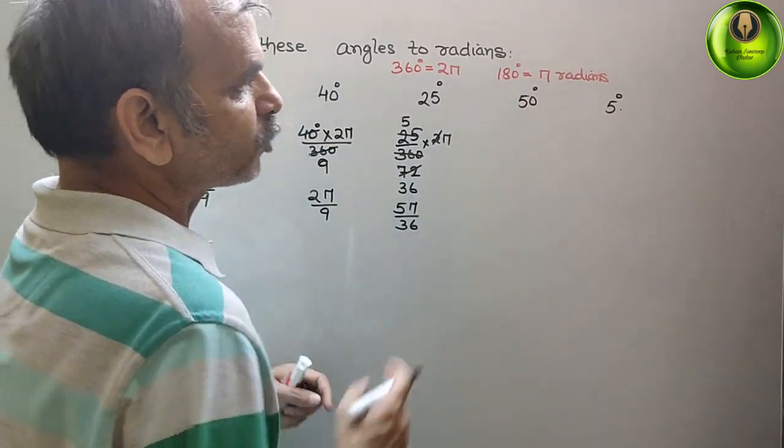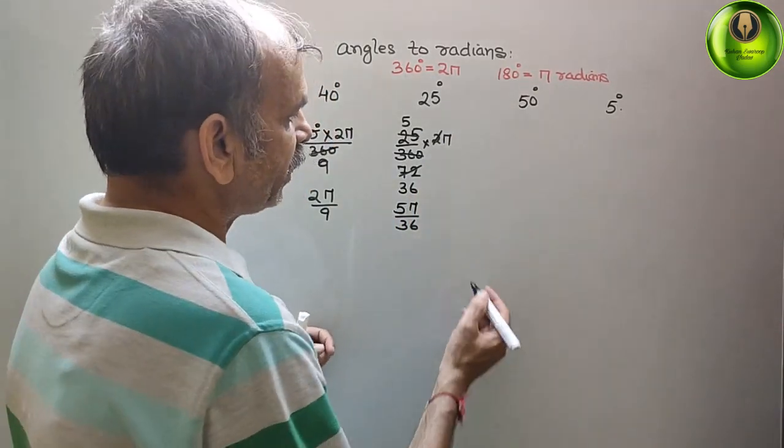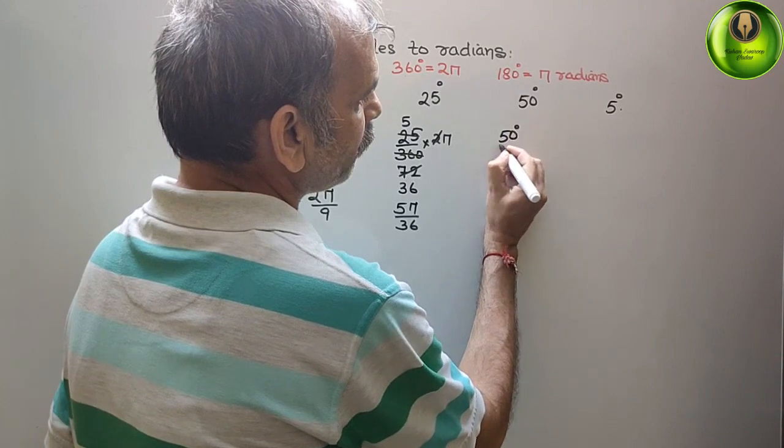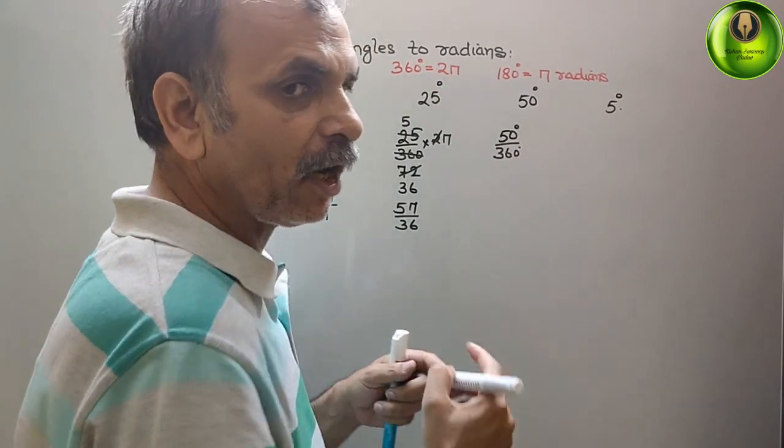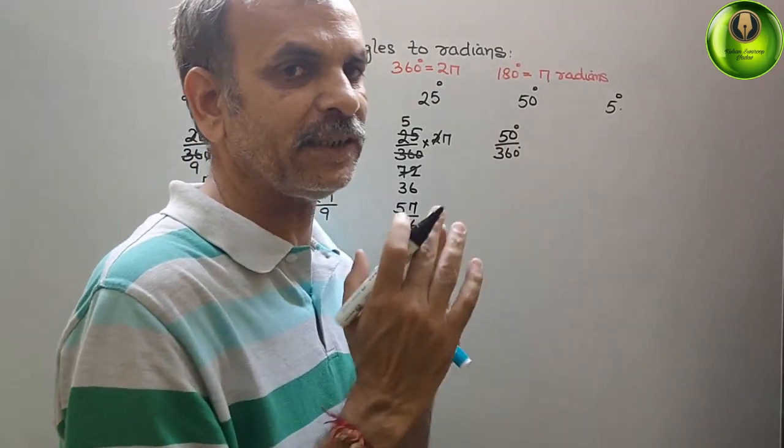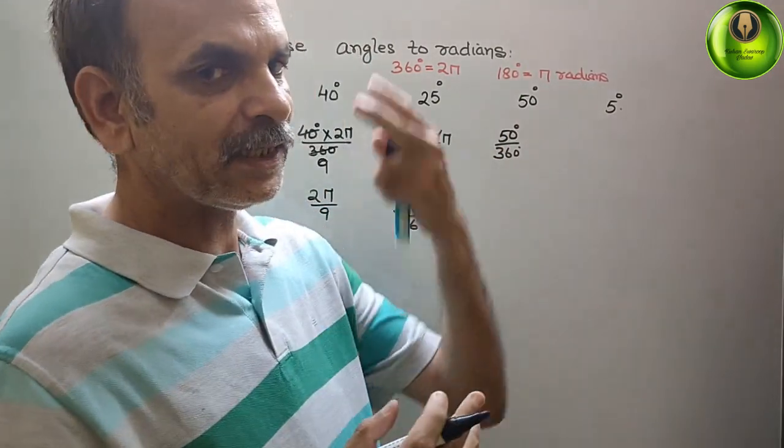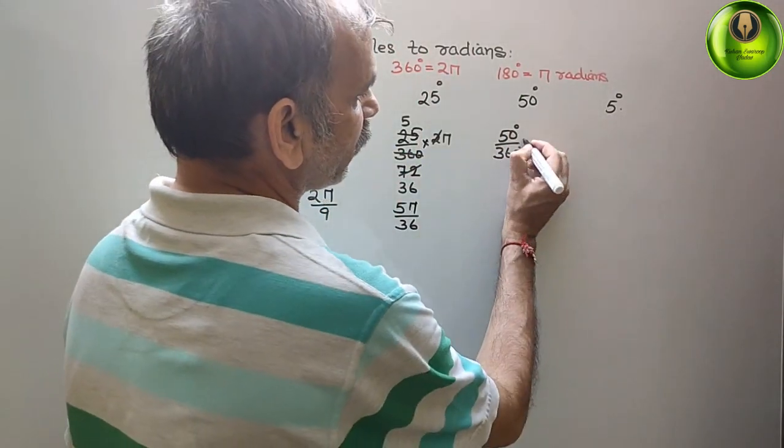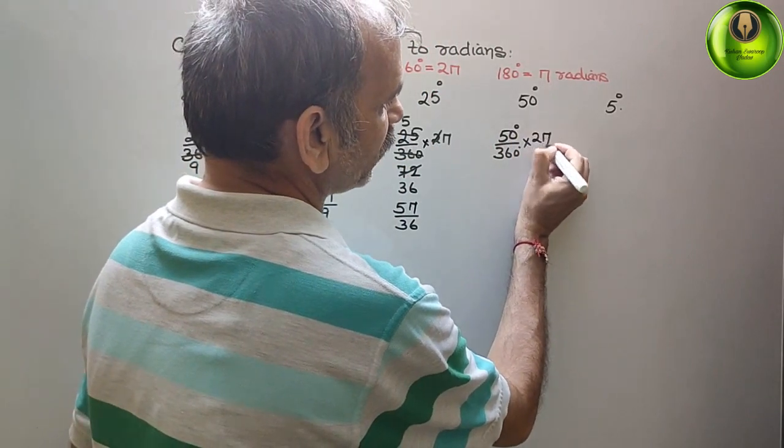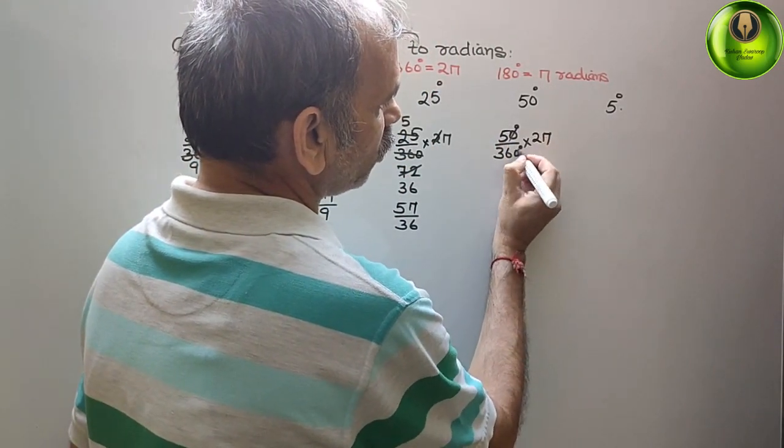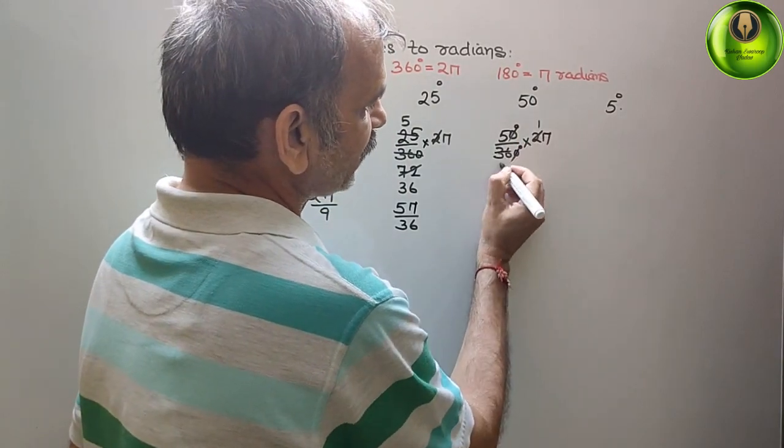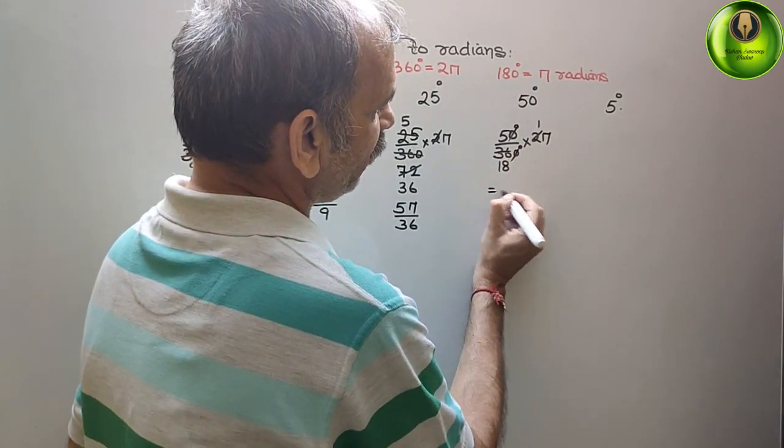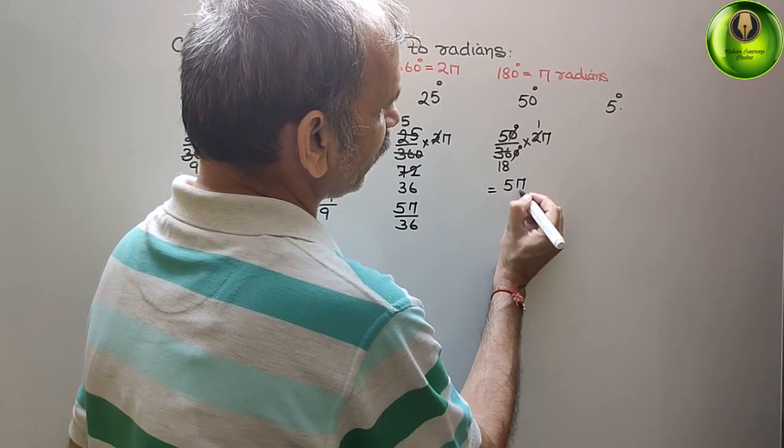Now comes to 50 degree. So 50 degree is how? 50 degree by 360 degree. Why means we are finding out from 360 degree how much it is there in π, so that is 2π. So that is 2π here. Now 0, 0 got. This 1 and this 18. So we will get 5π by 18.